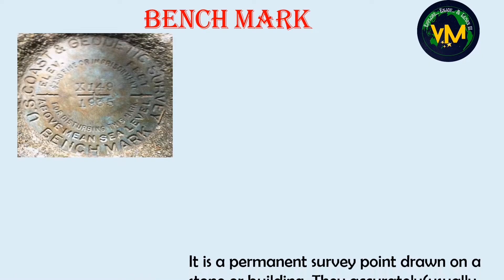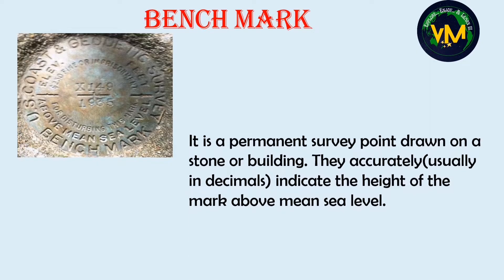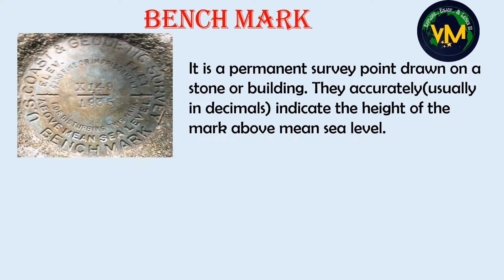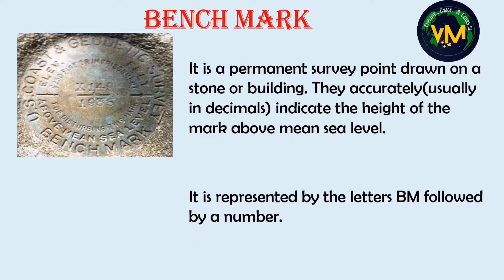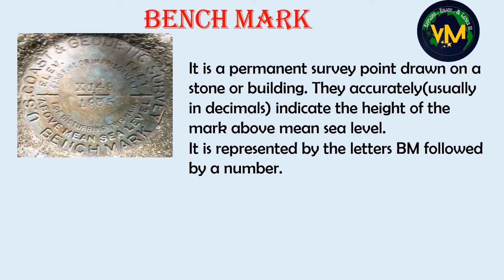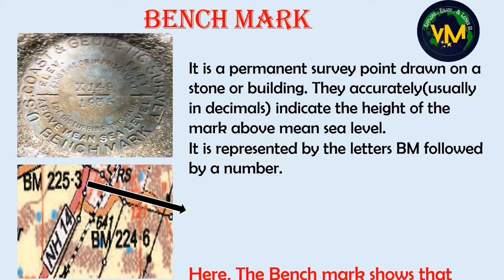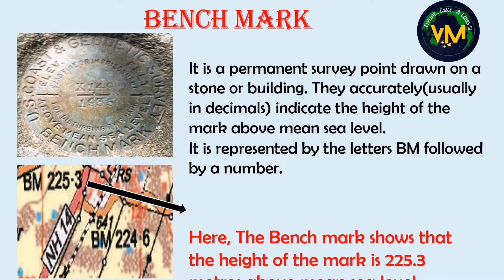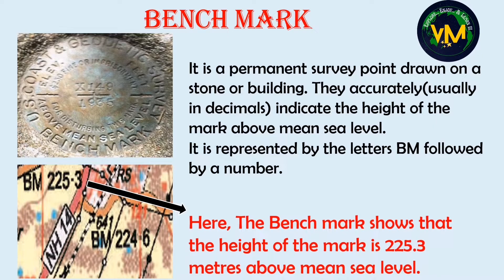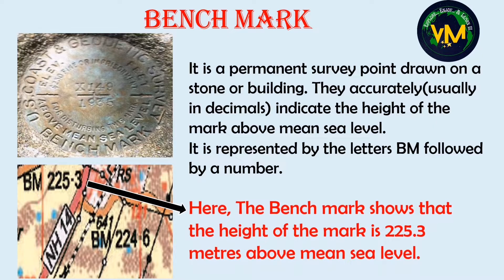Number three is benchmark. It is actually a permanent survey point drawn on a stone or a building. They are very accurate — they are usually written in decimals. It is represented by the letters BM followed by a number. So in the exam if they ask what is BM 225.3, the answer is: it is a benchmark that shows the height of the mark is 225.3 meters above sea level. The words 'benchmark' and 'above sea level' are very important.